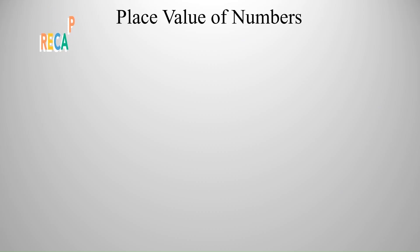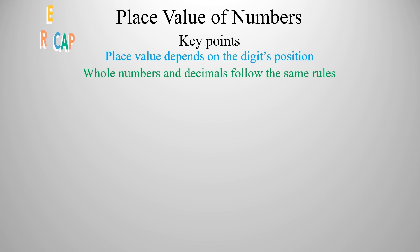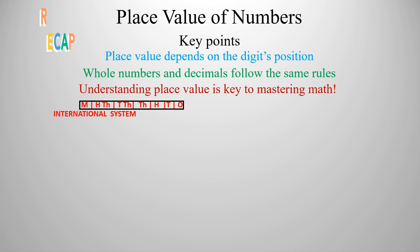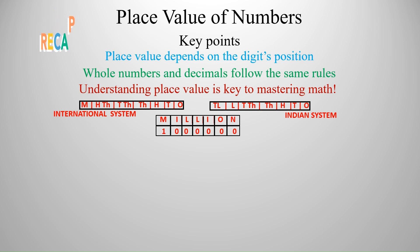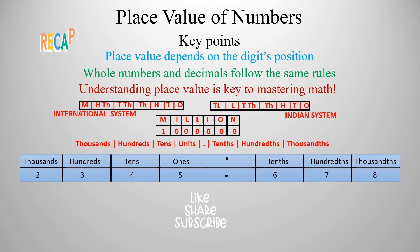Here is a recap of what we have done. Place value of numbers. Key points: Place value depends on the digit's position. Whole numbers and decimals follow the same rules. And understanding place value is key to mastering math. Now, here are some grids: international system, Indian system, million. A grid for million with six zeros. And here is a grid with both whole number part and decimal part. Here is one example. If you have liked the video, like, share, and subscribe. And stay tuned for my next video on decimals.